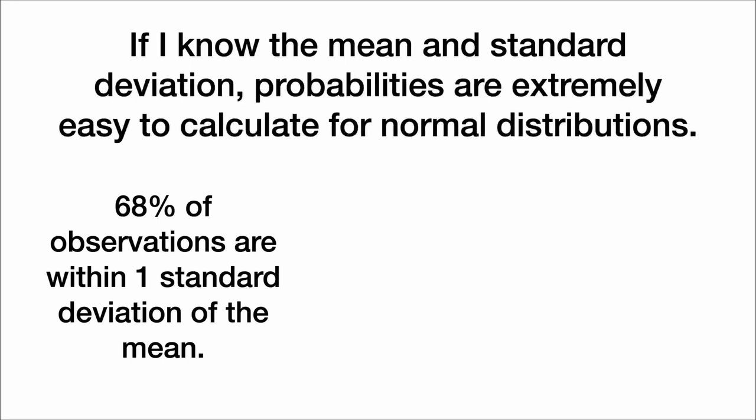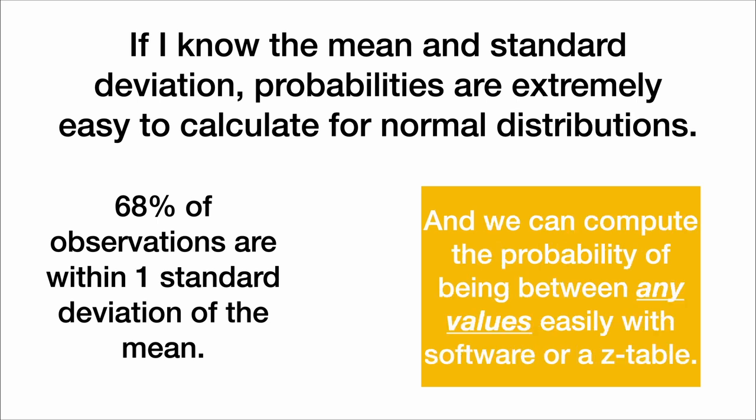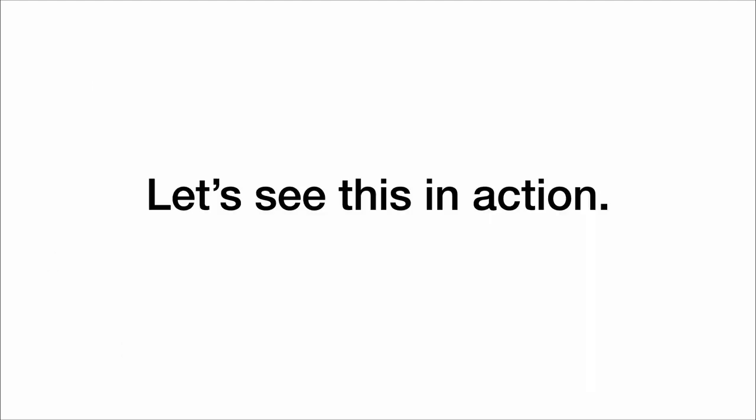For example, 68% of observations are within one standard deviation of the mean, 95% are within two standard deviations, and 99.7% are within three standard deviations. And we can compute the probability of being between any values easily with software or a z-table. Let's see this in action.